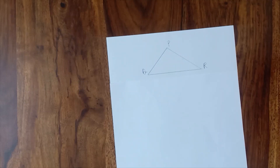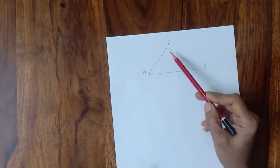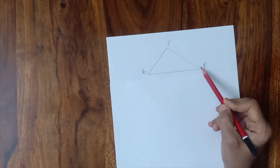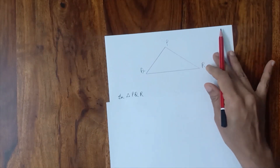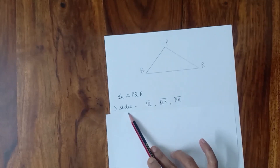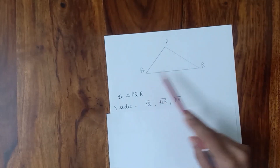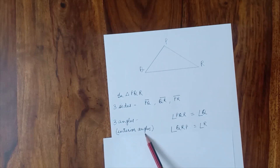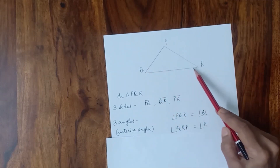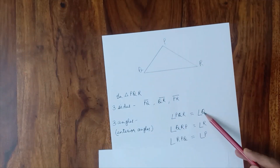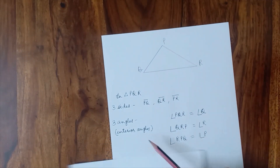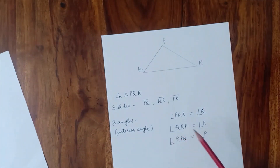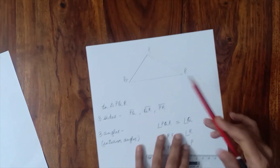Hey everyone, I am back with one more video. Let us take a triangle PQR. We all know that a triangle has three sides — PQ, QR, and PR. A triangle also has three interior angles, meaning the angles formed inside the triangular region: angle P, angle Q, and angle R.